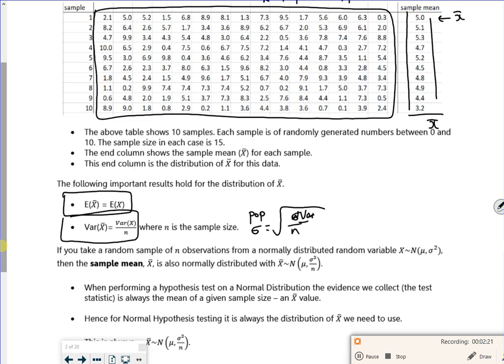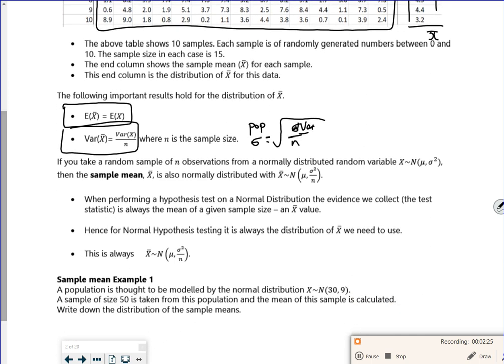If we had something which was X follows a normal distribution with μ and σ², and you have a sample mean, so you know how many is in your sample, it becomes x̄, that's your sample mean.